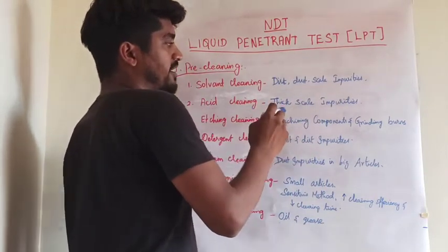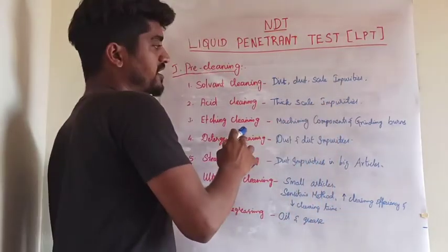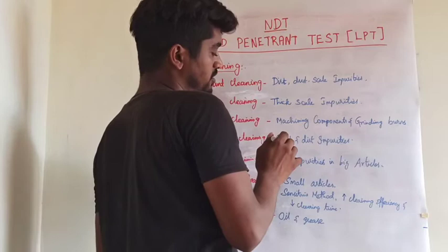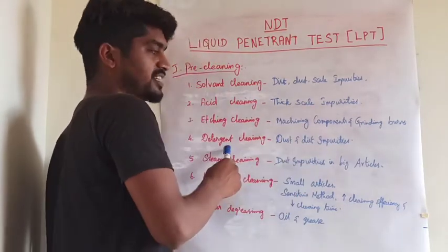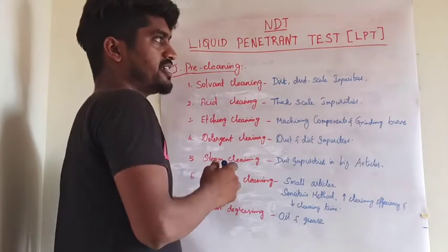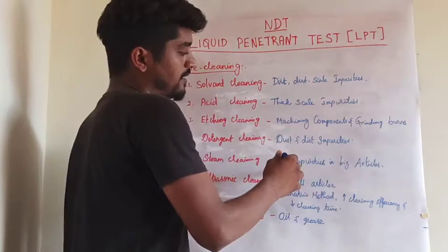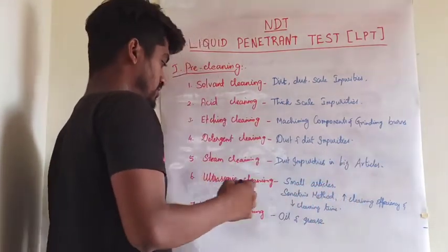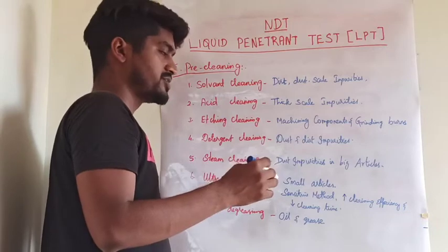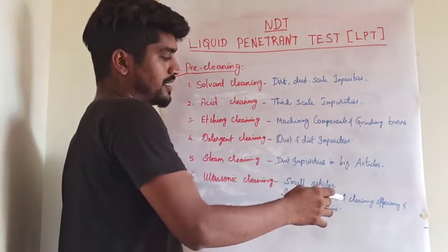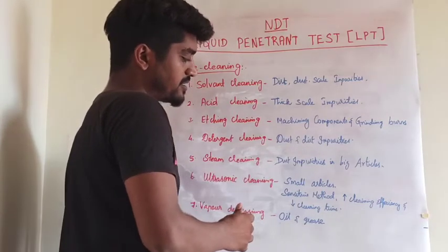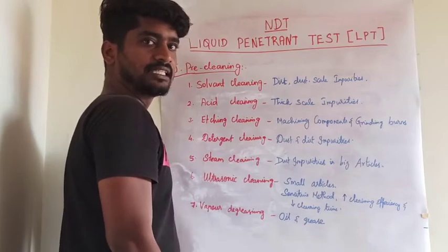The second is acid cleaning, used to remove thick scales and impurities. Third is etching cleaning, used for machined components and grinding bolts. Fourth is detergent cleaning, to remove dust and dirt impurities using detergent. Fifth is steam cleaning, where steam is used to clean dust impurities in big articles. Sixth is ultrasonic cleaning, a sensitive method used to remove contaminants from small articles with high cleaning efficiency and decreased cleaning time. Seventh is vapor degreasing, used to remove oil and grease impurities.